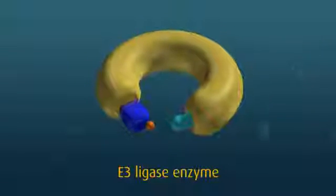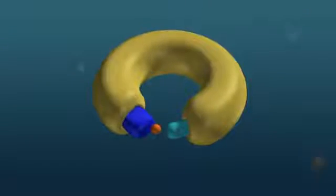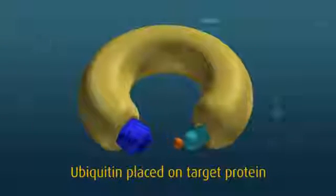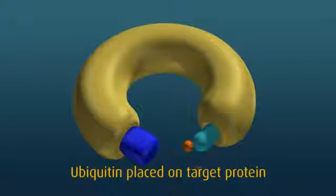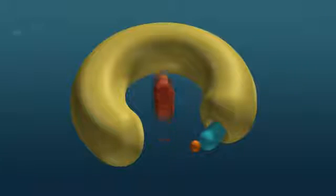The E3 enzyme acts as a platform on which the target protein substrate and the active E2 Ubiquitin complex can meet and interact. The E3 enzyme is extremely fussy about exactly which E2 enzyme and which protein can interact. The correct E2 enzyme loaded with activated Ubiquitin can move and position itself correctly on the E3 ready for action.